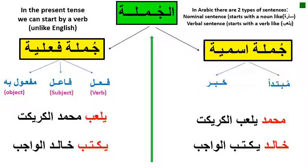In the present tense, we can start by a verb, unlike English. In Arabic, there are two types of sentences: nominal sentence and verbal sentence. A nominal sentence starts with a noun like Sara, Muhammad, المدرسة, الحديقة. But a verbal sentence starts with a verb like يلعب, يكتب, يقرأ. Let's see an example.